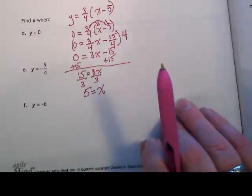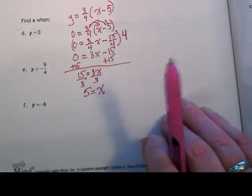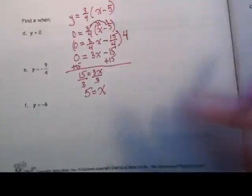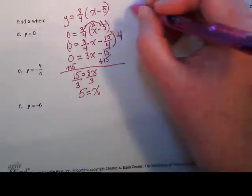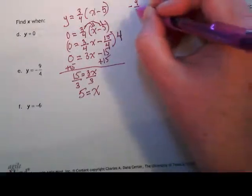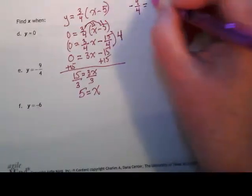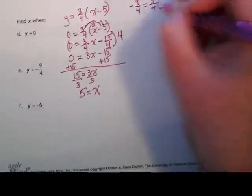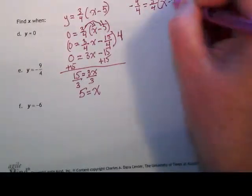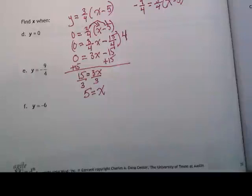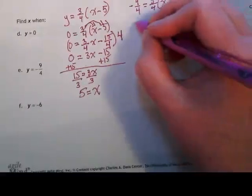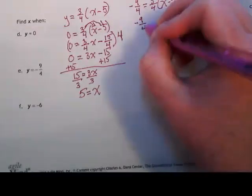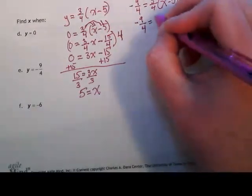Okay, so I hope that helps walking through a couple of equations here and I want you to try the others on your own. I will say if I was going to set up the next equation, negative 9 fourths as my y is equal to 3 fourths x minus 5, I would do the same thing. I distribute this 3 fourths x and get that fraction again and then I'm going to multiply everything by the reciprocal four.